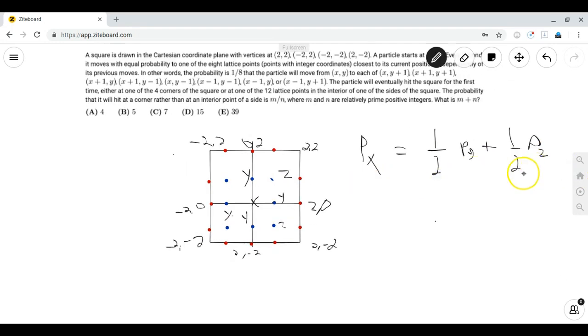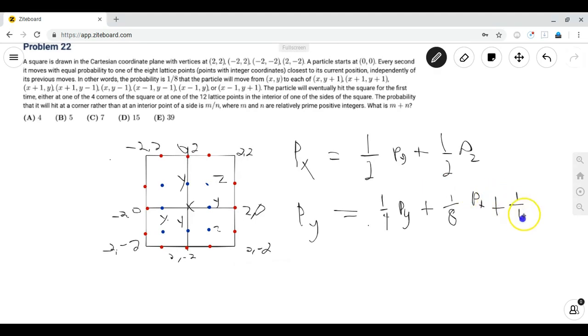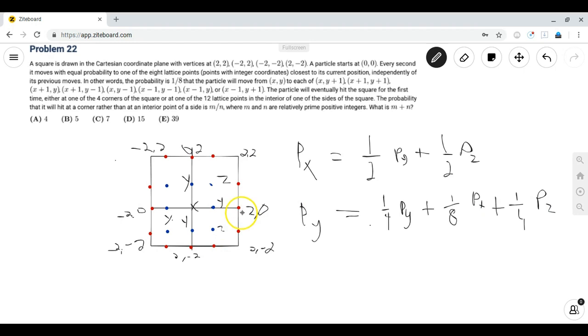Since we have one equation but we have three variables, we'll have to make at least two more equations to relate our things together. So now let's look at what happens when the particle is at point Y. So P(Y) is equal to... it moves to Y again with probability one-fourth because it can move diagonally. It moves back to X with probability one-eighth, and it moves up or down with probability one-fourth, so that's P(Z). And if you move right, right up, or right down, then your walk is going to end because you want to hit a corner but you just hit a side and you're done. So that happens with probability three-eighths but it also results in a probability zero of hitting a corner, so we just ignore that.